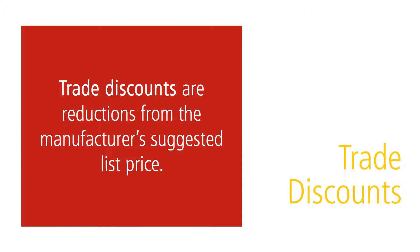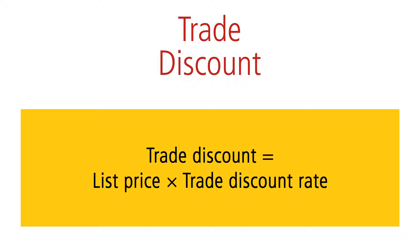Trade discounts are reductions from the manufacturer's suggested list price. They are given to businesses at various levels of the trade channel for the performance of marketing functions. These functions might include activities such as selling, advertising, storage, service, and display. Manufacturers print catalogs showcasing their merchandise that include list prices. These prices are then discounted for these functions. The amount of a single trade discount is calculated by multiplying the list price by the trade discount rate.